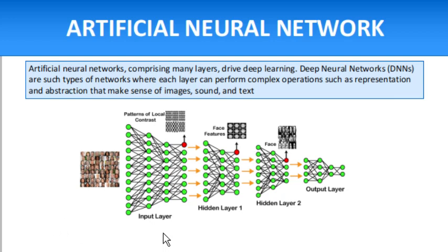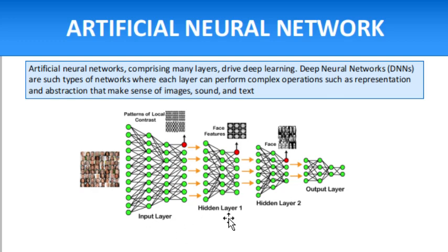Basically, as you can see here, the neural network takes the input, then there are a few hidden layers — hidden layer 1, 2 — and then it produces the output layer. This is the main concept of an artificial neural network: input, hidden layers, and then the output. These hidden layers are basically the processing units that process the inputs.